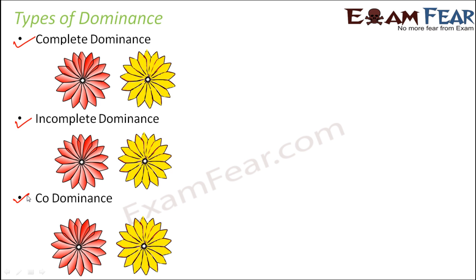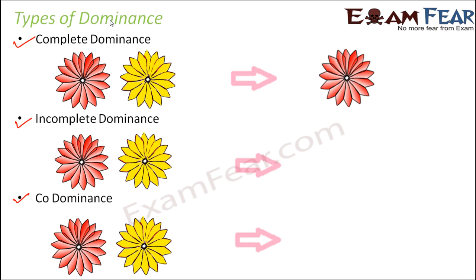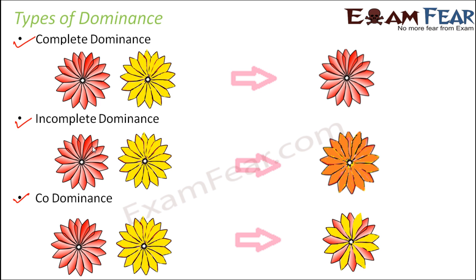To illustrate all three with one example: crossing a red flower with a yellow flower. Complete dominance would give a red flower, since red is completely dominant over yellow. Incomplete dominance would give an intermediate phenotype — neither red nor yellow, something like orange. Co-dominance would mean some petals are red and some are yellow. This covers all aspects of dominance.